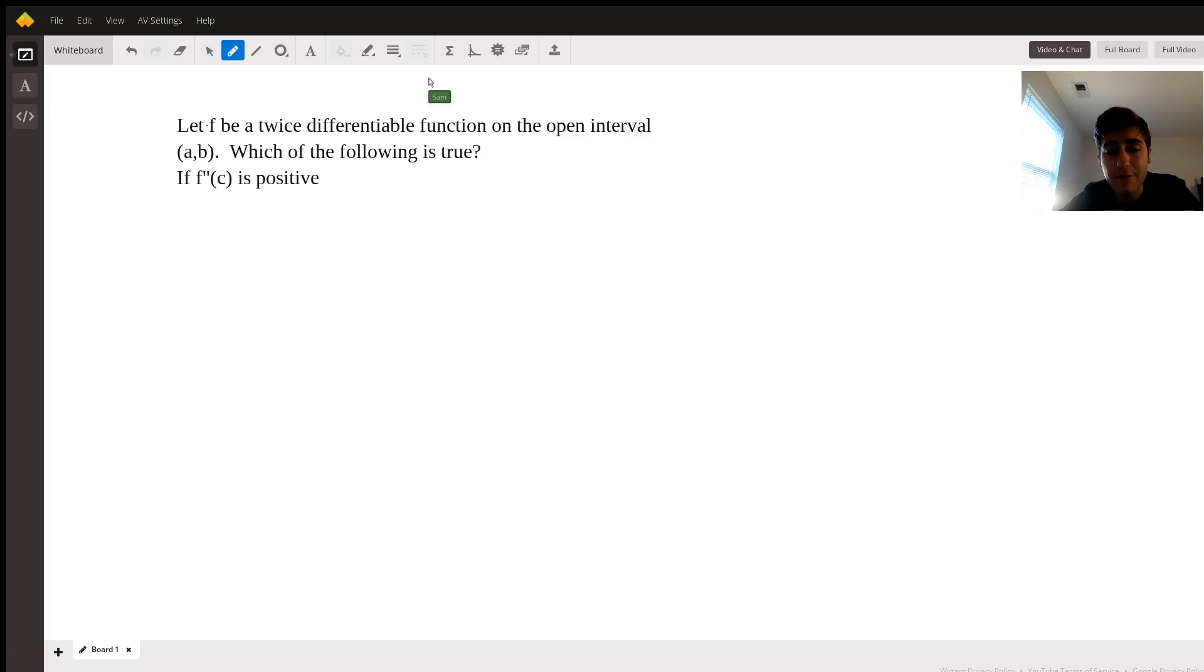has a local maximum at x = c. So we can see at a glance that this isn't necessarily true, because we would know that it has a local maximum or minimum at x = c if the first derivative